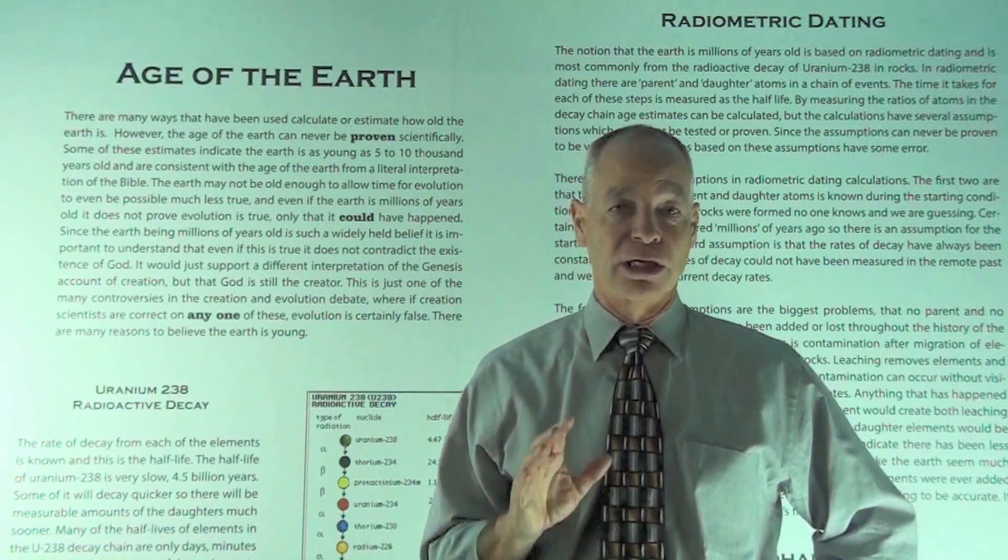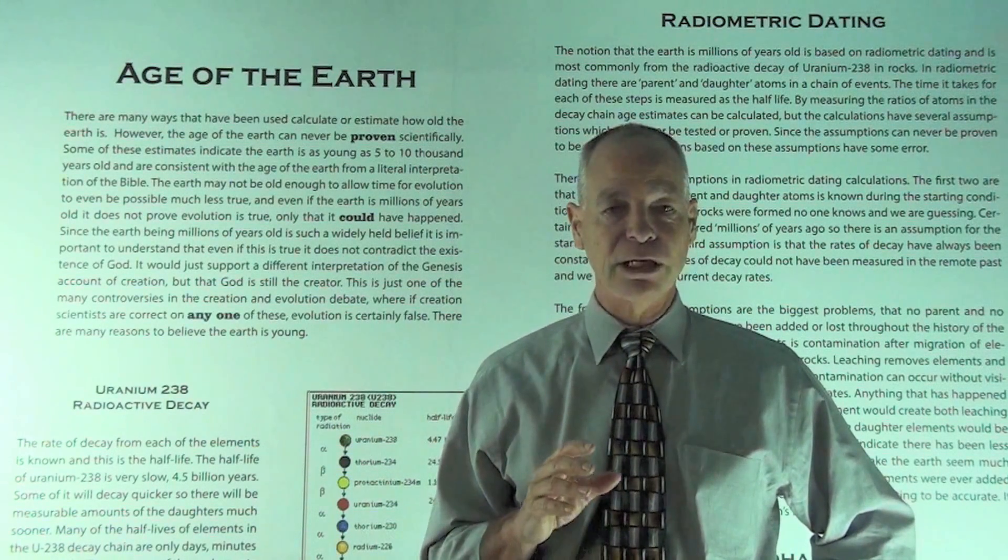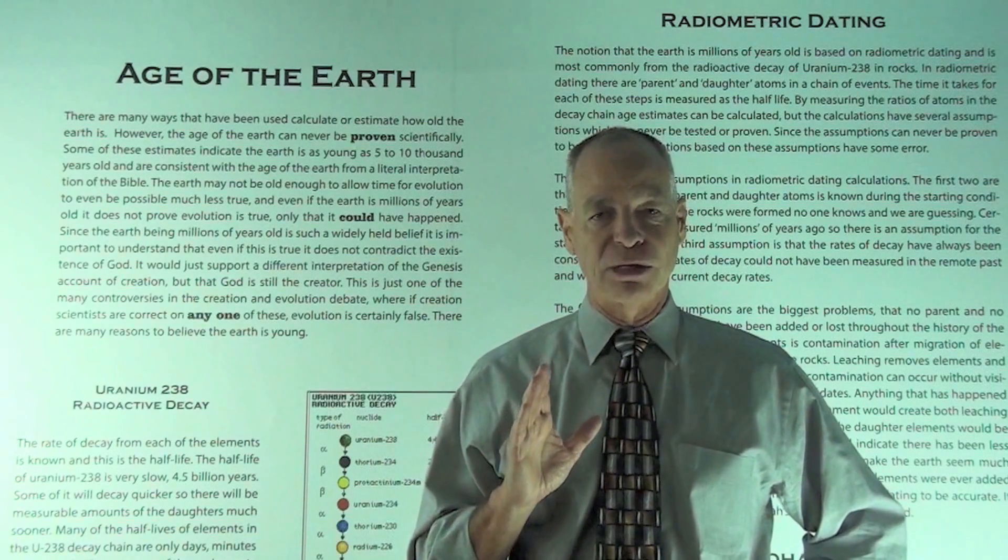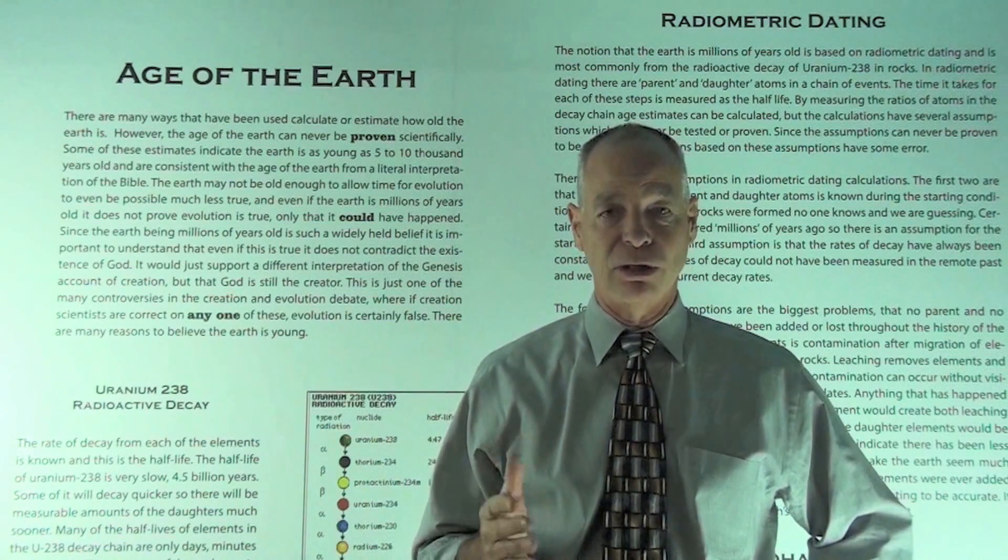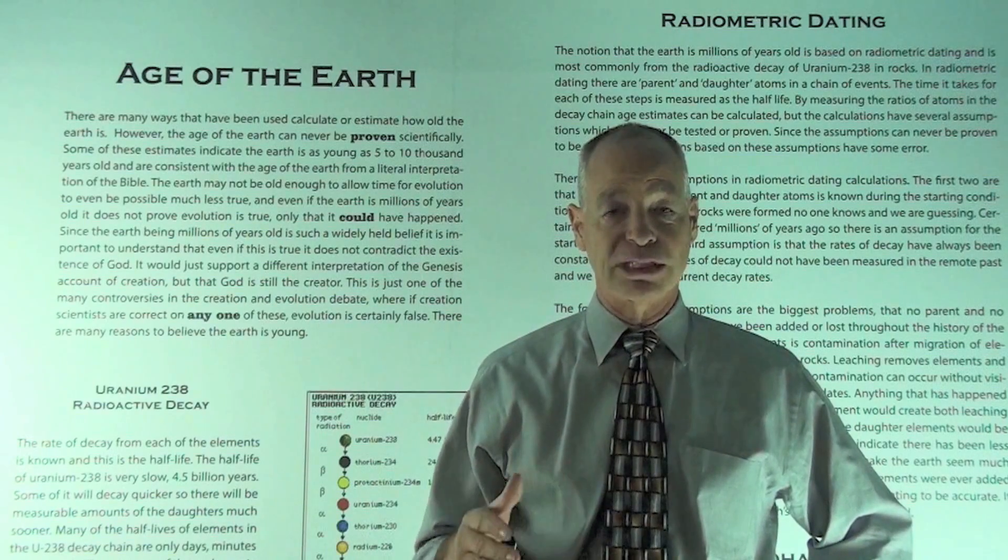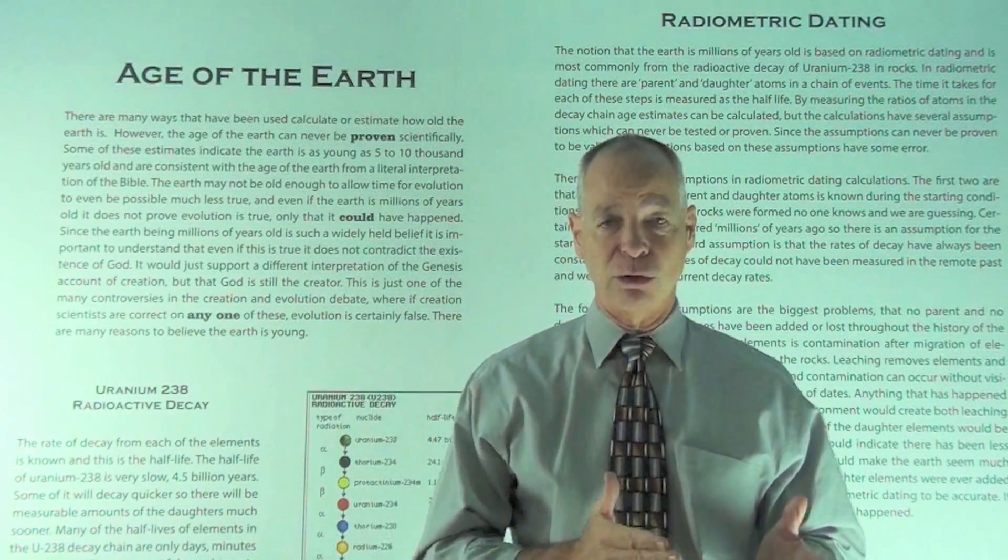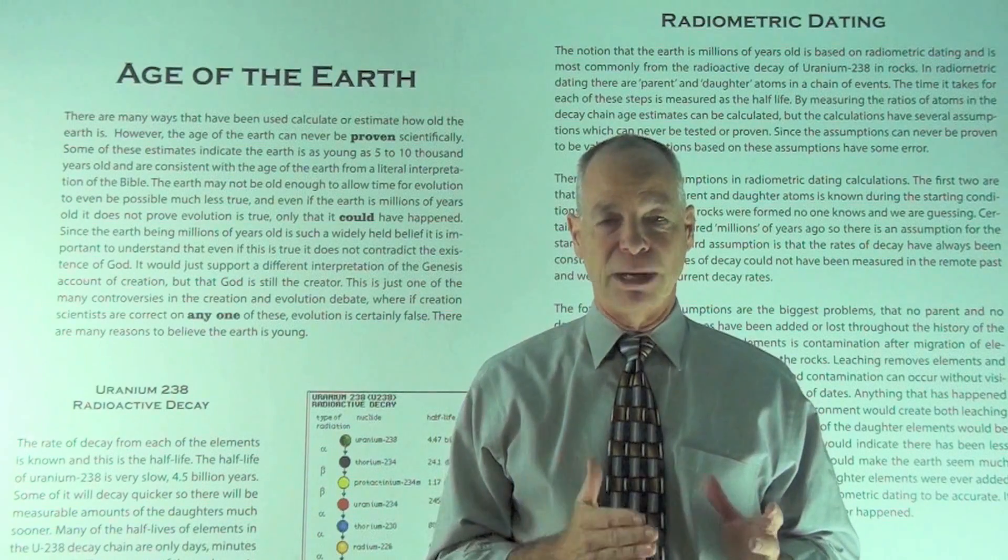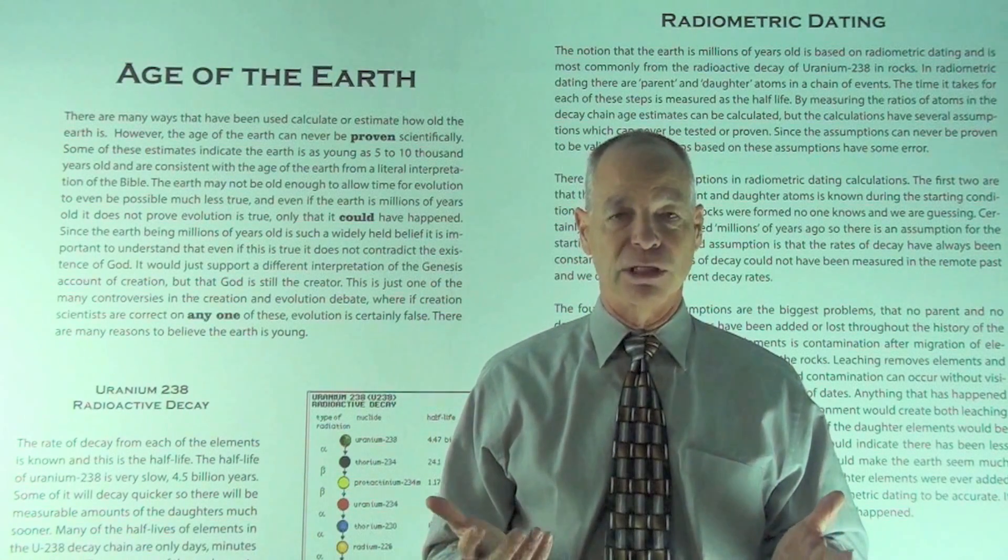But the fourth and fifth assumptions are the largest problems for evolution. And these have to do that the amount of atoms in the rock have never been added to or subtracted from, so that we can use these ratios for these calculations. But if you have contamination of a rock, you have things that are put into the rock later and that would change the amount and relative proportions of these atoms and would affect the calculations.